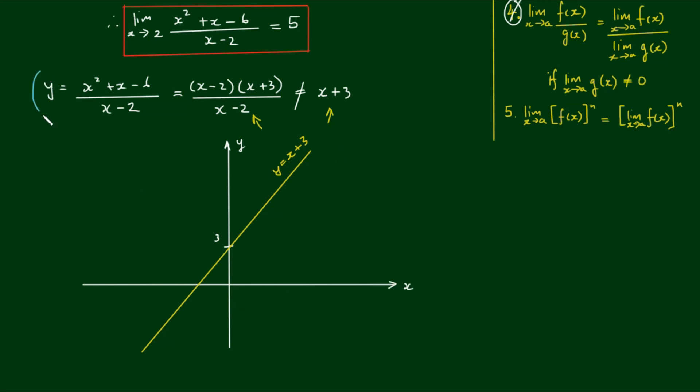Now the graph y equals x squared plus x minus 6 on x minus 2 also looks the same. So I'm going to overlay them on top of each other. So the cyan curve is y equals x squared plus x minus 6 on x minus 2.